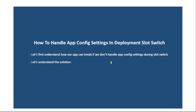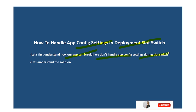In this video, let's understand how we can handle app config settings during deployment slot switch. Let's first understand how our app can break if we don't handle app config settings during this slot switch, and then let's understand the solution, which is really simple.